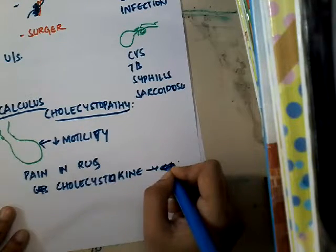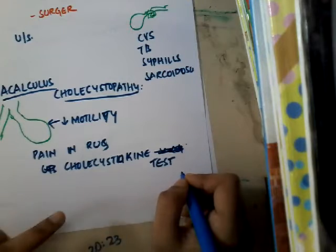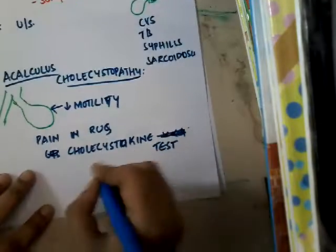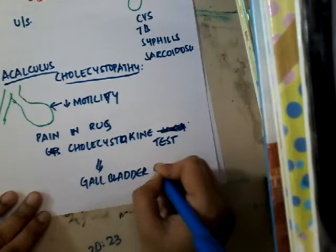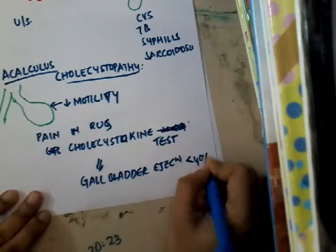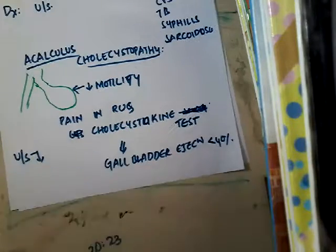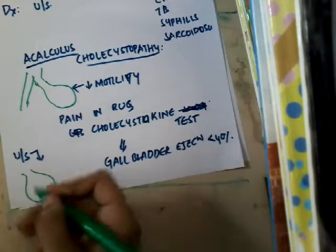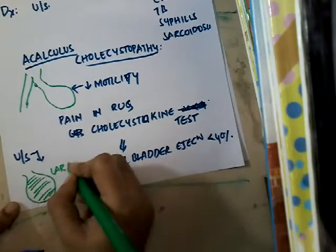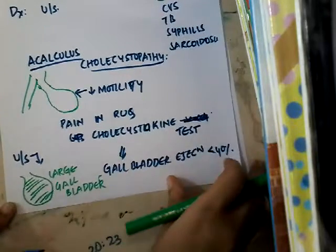A gallbladder ejection fraction of less than 40% is one of the diagnostic criteria for acalculous cholecystopathy. On ultrasound, you see a very large gallbladder because there is decreased motility and all the bile is accumulating inside. This is how you identify acalculous cholecystopathy.